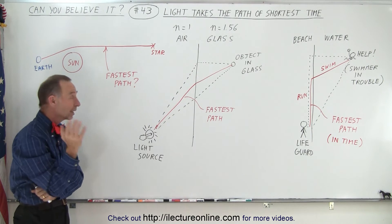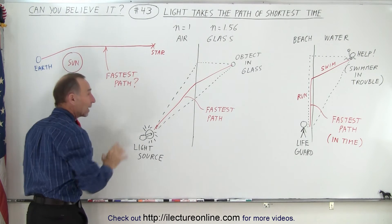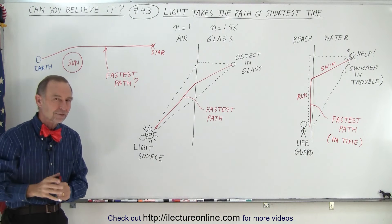Well, it turns out that if we were to do a calculation, I bet that the path that light takes again will be the fastest path, the path that takes the least amount of time.